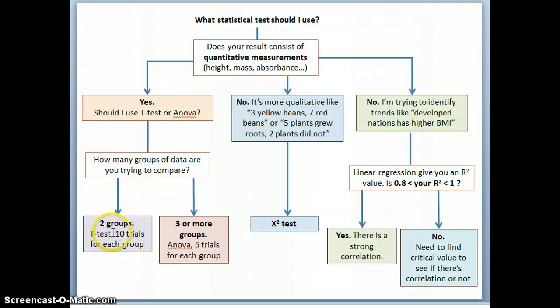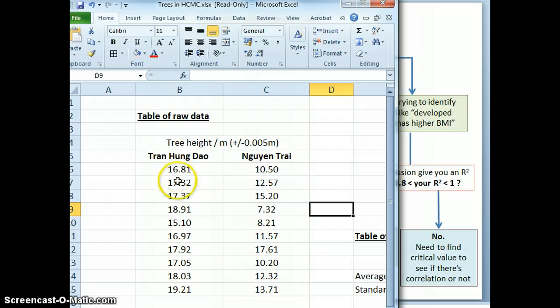So that means I need to use a t-test. I need 10 trials for each group. Do I have 10? 1, 2, 3, 4, 5, 6, 7, 8, 9, 10. Oh great, I have exactly 10 samples in this group. So I could do a t-test. Wonderful.